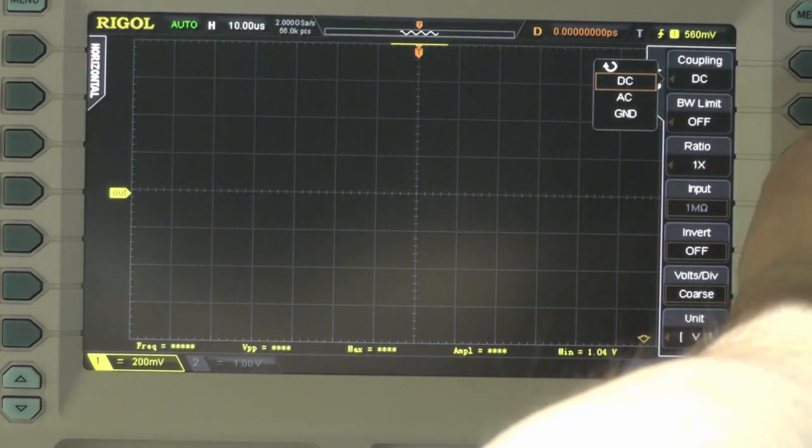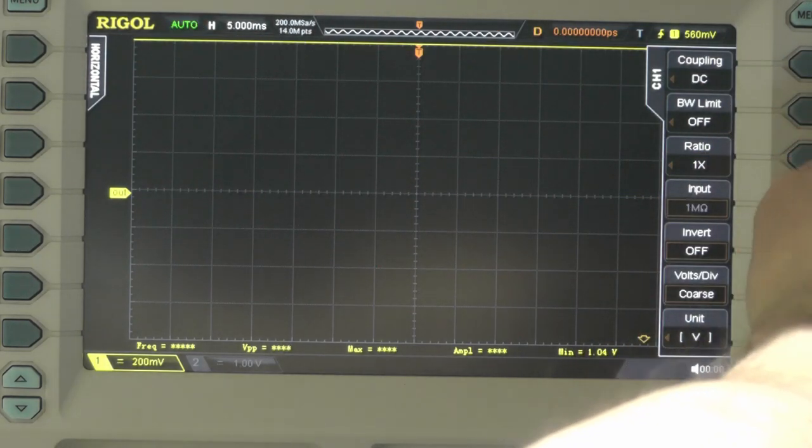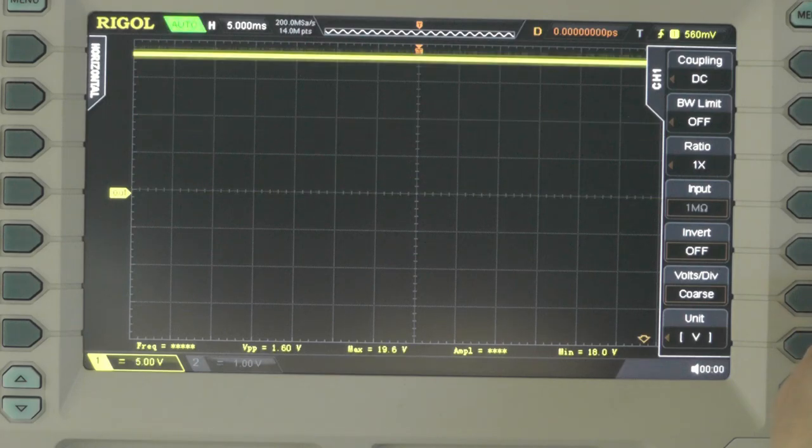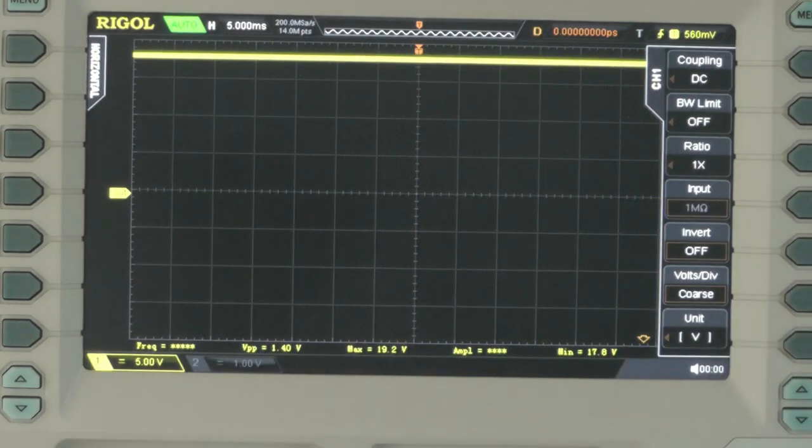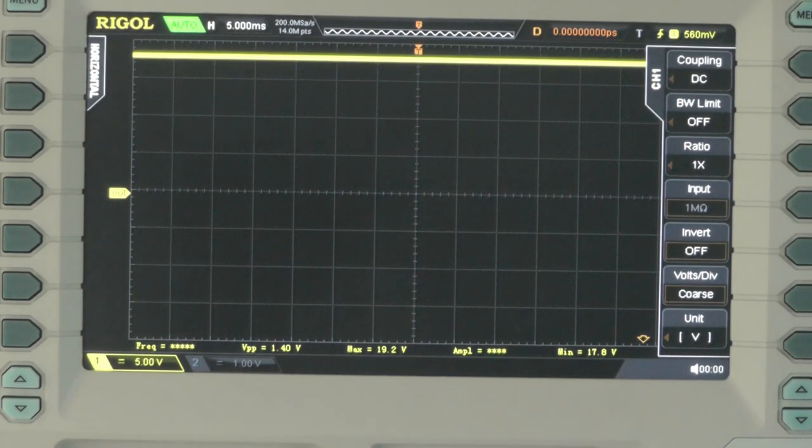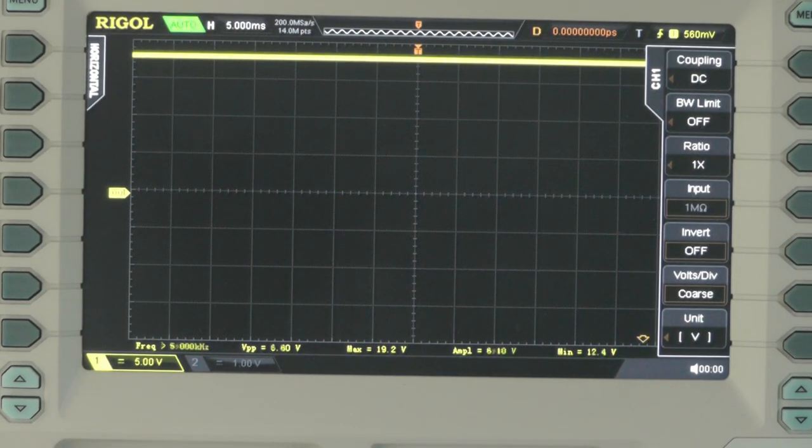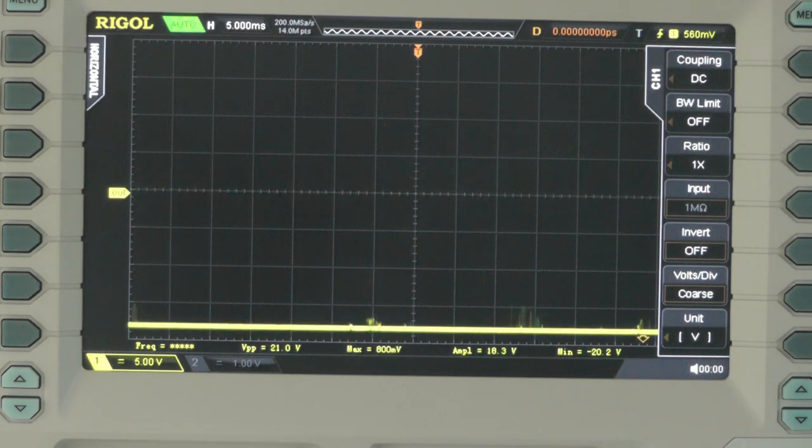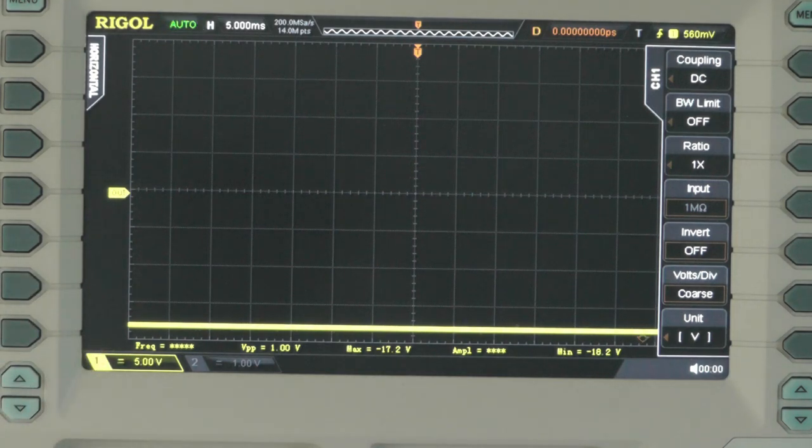Getting back down to five volts per division, and I'll move it across off-camera onto the negative output. You can see basically the same again, probably slightly less noise on the negative rail there. That's about your minus 18 volts as well.